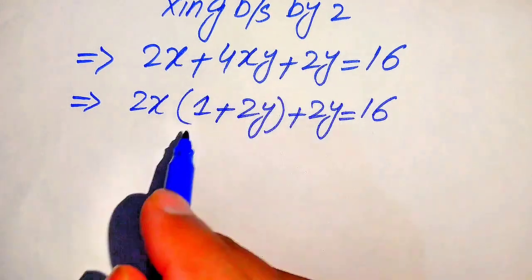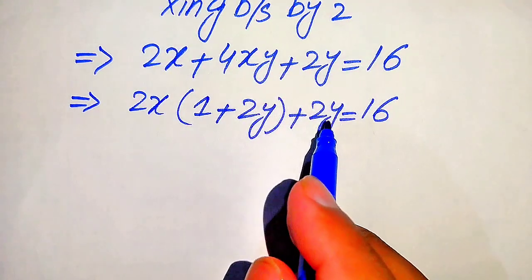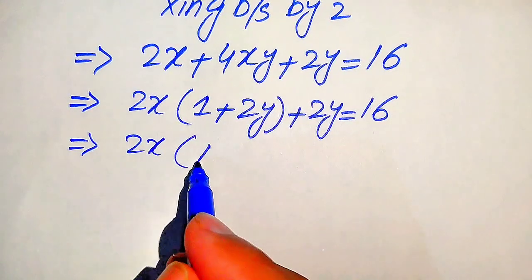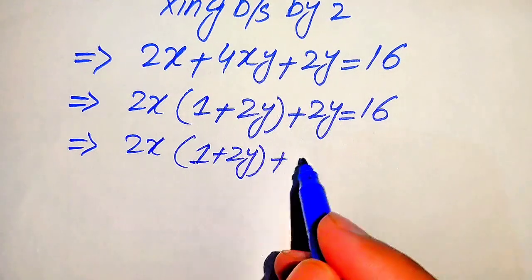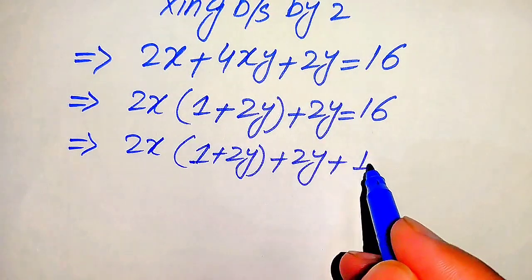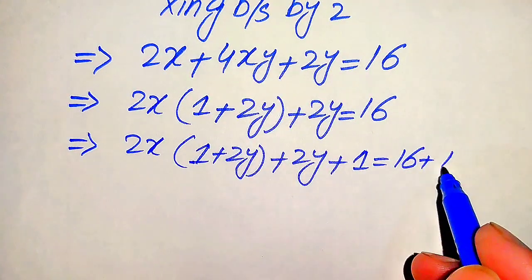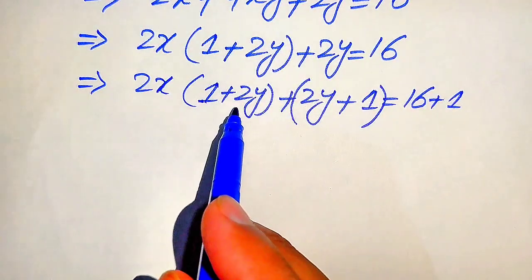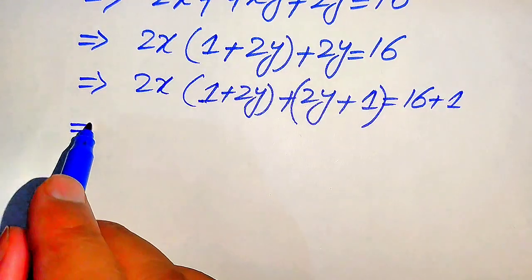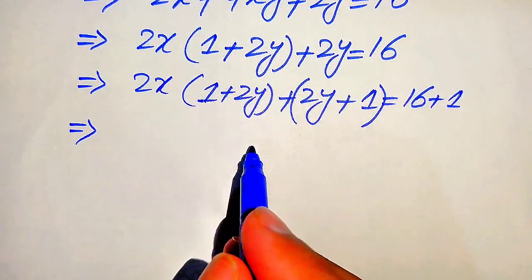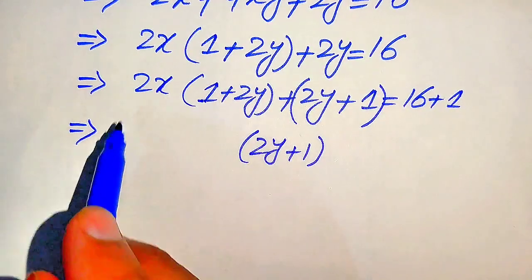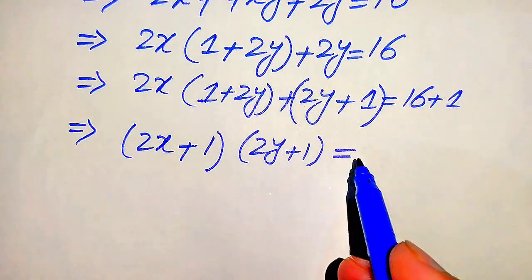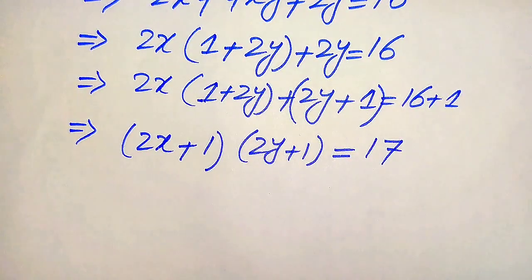We notice we have (1 plus 2y) in the first term but only 2y in the second term — we need a 1 there. So we add 1 to both sides. This gives us 2x(1 + 2y) + (2y + 1) = 17. Now we factor out (2y + 1) to get (2x + 1)(2y + 1) = 17.